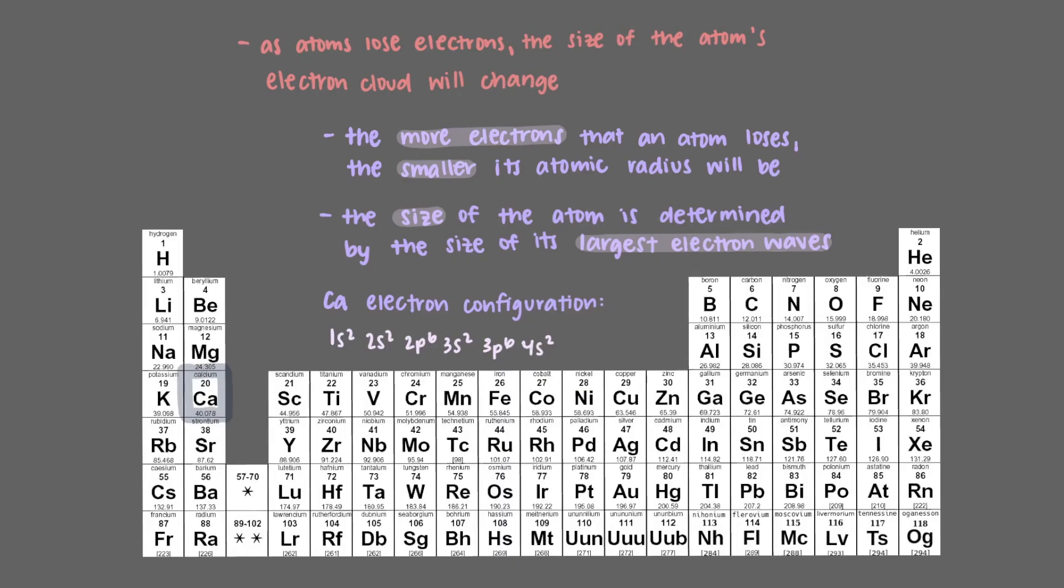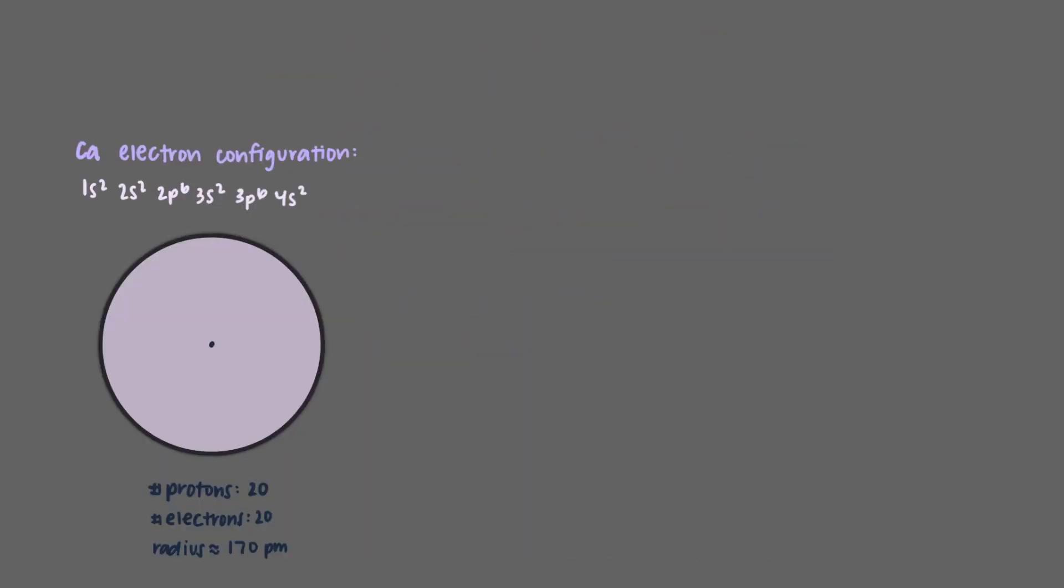In calcium, the largest of its 20 electron waves is the 4s electrons. There's 2 of them. As an atom like calcium loses electrons, the total negative charge of the electron cloud decreases, but the nuclear charge, the number of protons in the nucleus, remains the same.